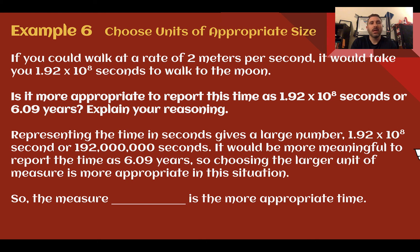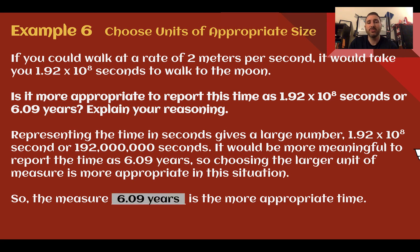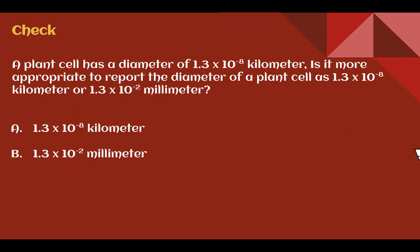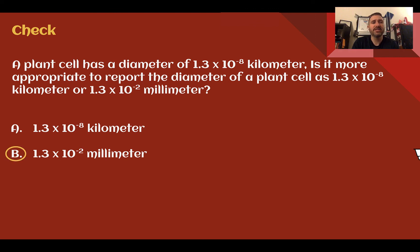Example 6: choose units of appropriate size. If you could walk at a rate of 2 meters per second, it would take you 1.92 times 10 to the 8 seconds to walk to the moon. Is it more appropriate to report this as 1.92 times 10 to the 8 seconds or 6.09 years? Because this is such a large distance — 192 million seconds — for most people it would be more meaningful to report the time in years: 6.09 years. Because the distance is larger, we choose the larger unit of measurement. The answer of 6.09 years is more appropriate.